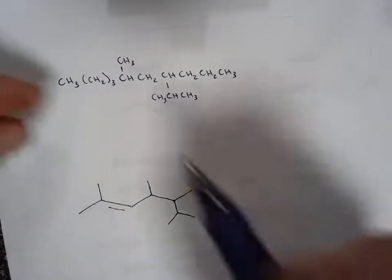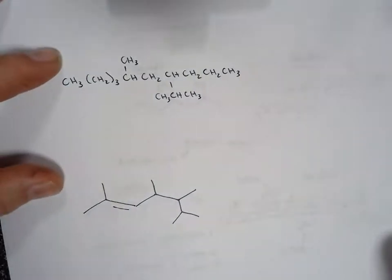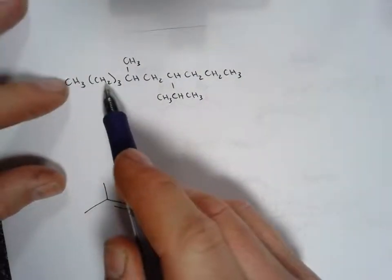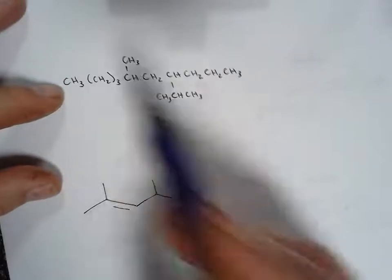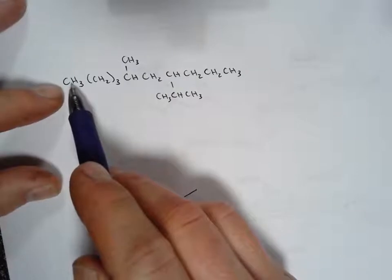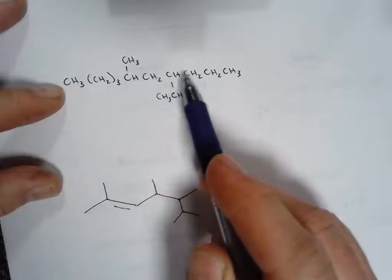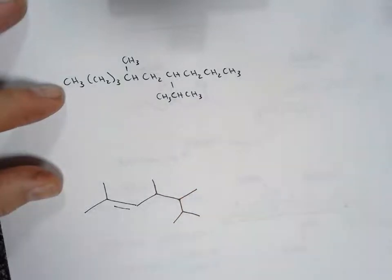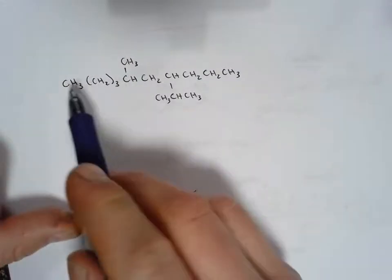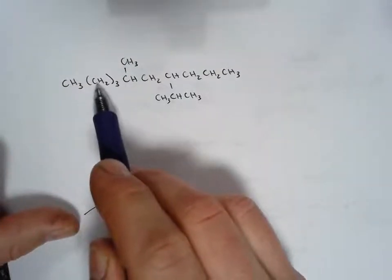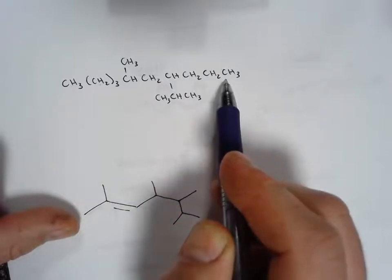This next one utilizes parentheses. The parentheses means that there are three repeating CH2s. So this would be CH3, CH2, CH2, CH2, CH2, then CH, CH2, CH2, CH2, CH3. And if we count all that up, we end up with one, two, three, four, five, six, seven, eight, nine, ten carbons in total.